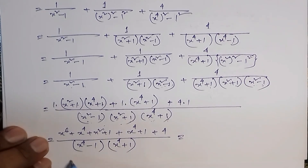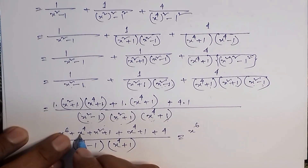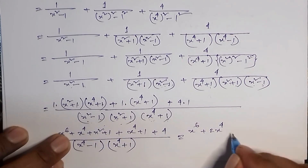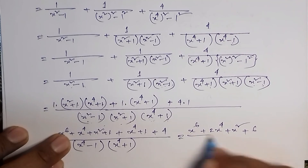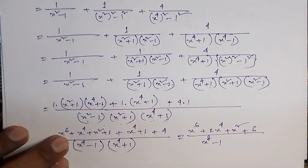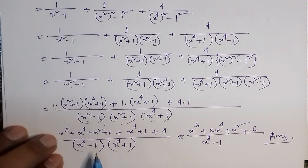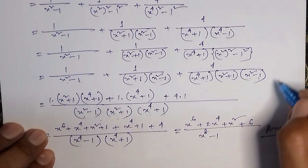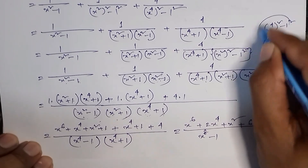Asha kuri clear bondhura. Ekhane jayga sankirna, aamra ekhane likhshi: x to the power 6 thakbe, x to the power 4 plus x to the power 4 — dui ta kazi 2 times x to the power 4 — plus x squared, ekhane 1, 1, 1, 4 jok korle habe 6. All divided by x to the power 4 minus 1 into x to the power 4 plus 1, arthad x to the power 8 minus 1. Ekhane hochha madher kankhi to answer — bandhura, x to the power 4 minus 1 into x to the power 4 plus 1, arthad a squared minus b squared ekhane a plus b into a minus b, arthad ekhane x to the power 4 squared minus 1 squared, arthad x to the power 8 minus 1. Aamra ekh bare likhhlam.